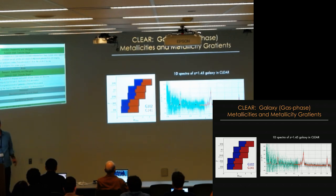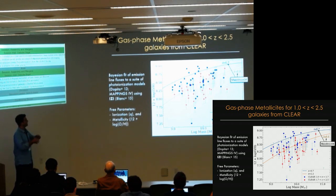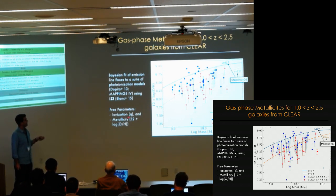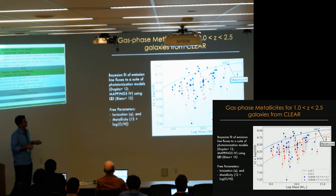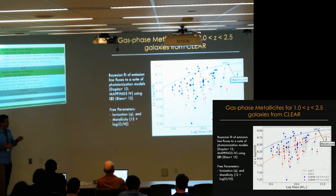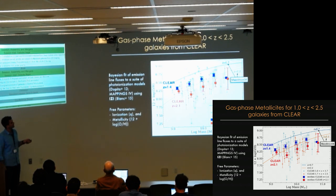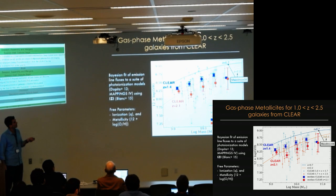Because we have multiple emission lines, we've adapted a Bayesian method to take full advantage of them. We take all available emission lines and compare them to predictions from photoionization models, marginalizing over parameters such as ionization and gas phase metallicity. Here's what we find for our sample of about 70 galaxies: the blue points show the stellar mass–gas phase metallicity relation — really the oxygen abundance — measured at redshifts 1 to 1.7 and 1.7 to 2.5. We see the evolution that people have measured previously, measuring a nice result for redshift 1.4 and out to redshift 2.1.